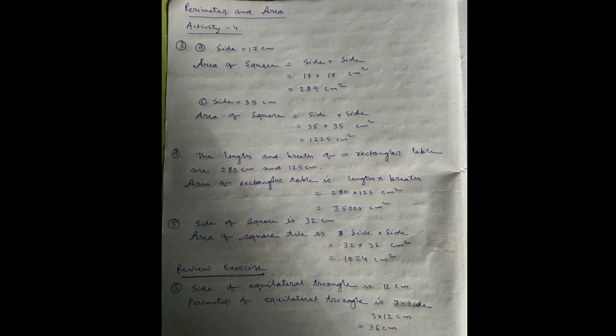Equal to 2 into 440 centimeter, equal to 880 centimeter. Area equal to length into breadth; length is 300 and breadth is 140, equal to 300 into 140 centimeter square, equal to 42,000 centimeter square.